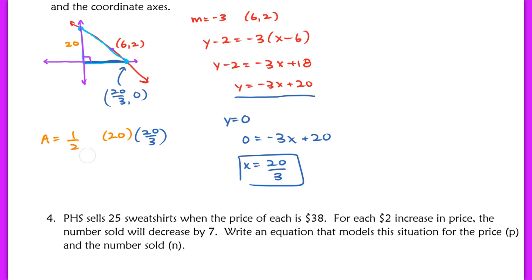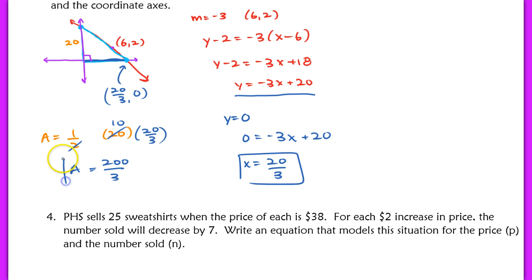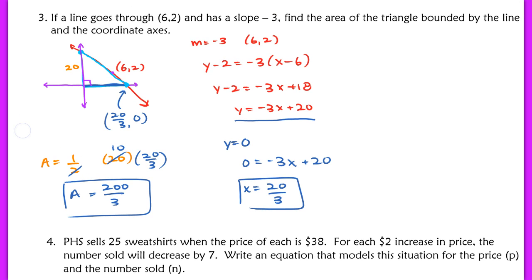Simplifying the area calculation: 1/2 times base times height equals 1/2 times 20/3 times 20. That simplifies to 200/3. So the area of that triangle is 200/3 square units.